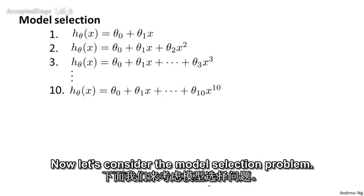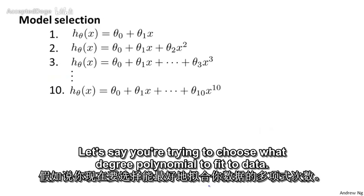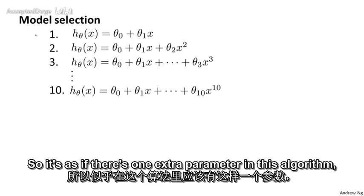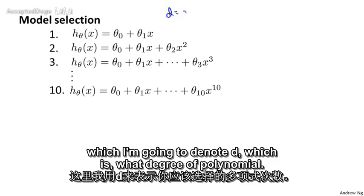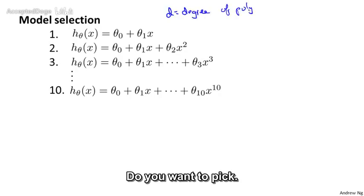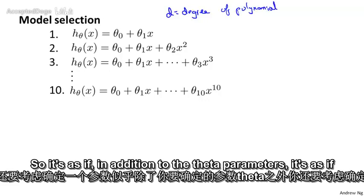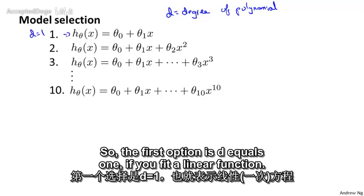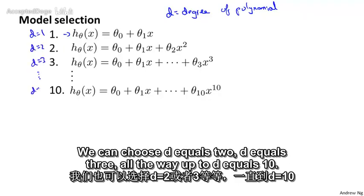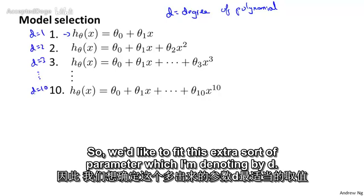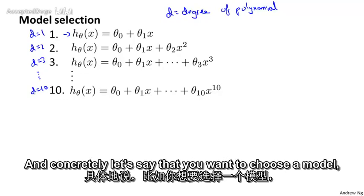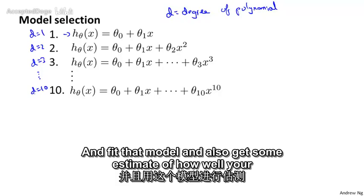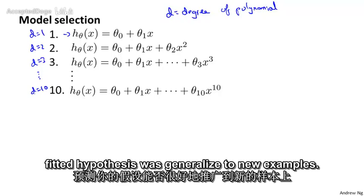Now let's consider the model selection problem. Say you're trying to choose what degree polynomial to fit to data — a linear function, a quadratic function, a cubic function, all the way up to a tenth order polynomial. It's as if there's one extra parameter d, which represents the degree of polynomial you want to pick. So in addition to the theta parameters, there's one more parameter d that you're trying to determine using your data set, ranging from d equals one up to d equals ten. We'd like to choose one of these ten models and also get an estimate of how well the fitted hypothesis will generalize to new examples.